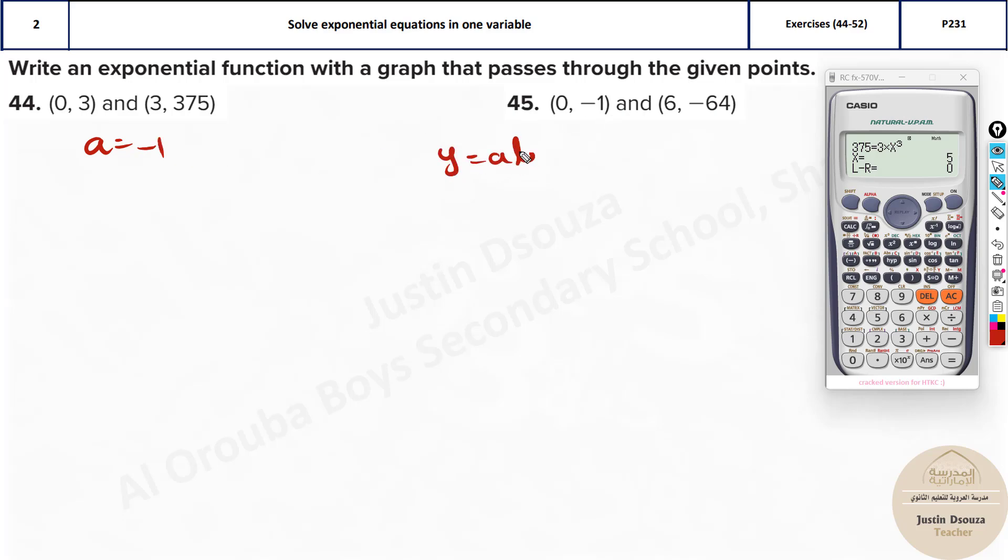Directly I can take a equals minus 1. Then just do it once y equals a b to the power x. Because you do not need to write the steps for the first point. Use this second part. Minus 64 equals minus 1 multiplied with b to the power 6. Now put this directly in the calculator. Use the bracket. When there's a negative sign it's better to use the brackets. Press equal to. It'll take some time. And now we've got the answer. It's 2.